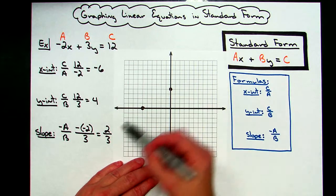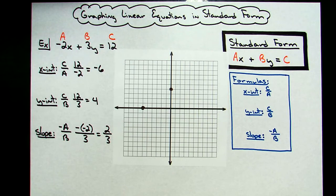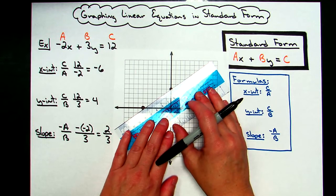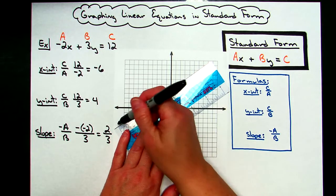And after we draw the line, then we're going to be able to verify that it's got a positive slope of 2/3. Let's put the line on.